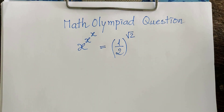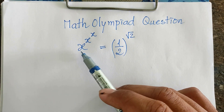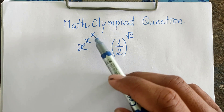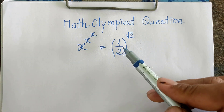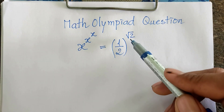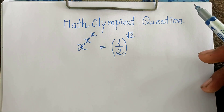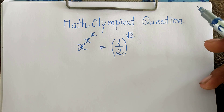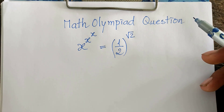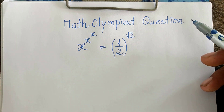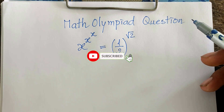Hello everyone, welcome to my YouTube channel. Today I have one exercise: 8^8^8 equals 1 divided by 2^(√2). Do you know how to show this? If you know, try it first, then come back to watch my video from beginning to end to verify your solution. Before we go to the solution, please don't forget to subscribe to my channel for more exciting videos.